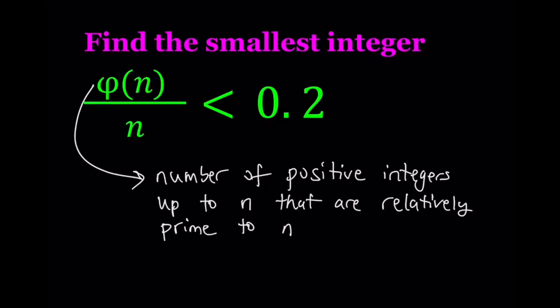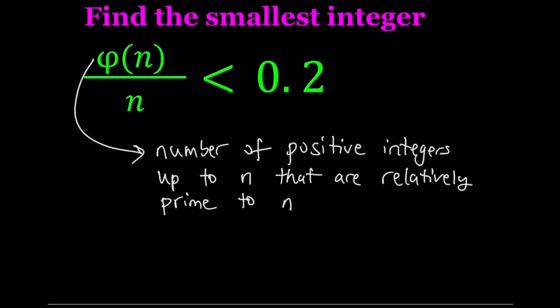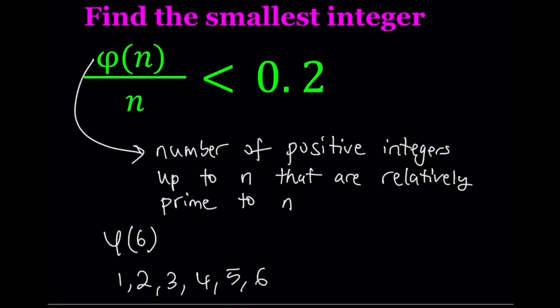I'll give you some examples. Let's take a number like 6. How do you find phi of 6? We look at all numbers less than or equal to 6: 1, 2, 3, 4, 5, and 6. We're going to compare these numbers to 6 by finding their GCD with 6, and if that GCD is 1, we count them.